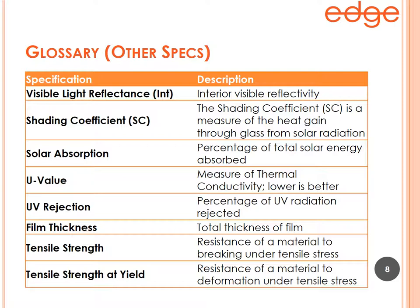Solar absorption is how much energy the glass absorbs with the film on it. U-value is a measure of thermal conductivity — the inverse of R-value — indicating how much heat conducts through the window; lower is better, but it's only really an improvement with low-E film. UV rejection is similar to IR rejection but in the UV region; all Edge films are over 99% UV rejection, so it's not a major differentiator for comparison.